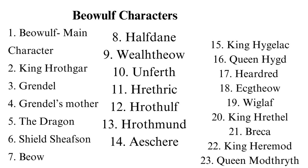The dragon is an old and powerful serpent who has treasures hidden in a mound, and he fights Beowulf in the last part of the poem when he raids the kingdom. Shield Sheafson is Hrothgar's ancestor, described as a legendary Danish king and founder among rulers. He rose from an orphan to a king and is valued by the people for his heroism and good leadership skills.